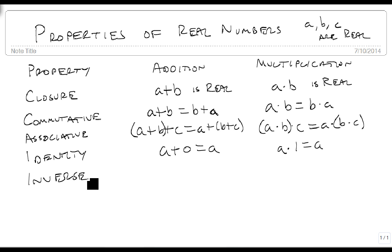The inverse property says if I take a number and add it to its negative, I will get zero. So the inverse property for addition gives zero. For multiplication, if I multiply a number by one over itself, then I'll get one. So multiplication inverse gives one, addition inverse gives zero.